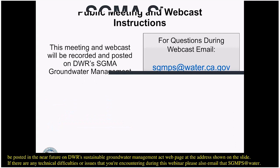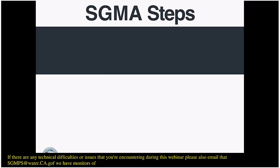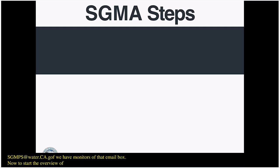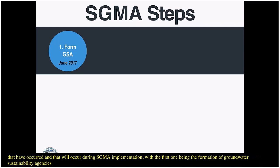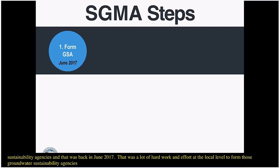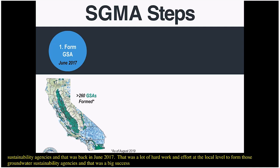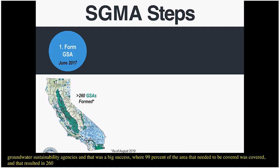Now we'll start an overview of the Sustainable Groundwater Management Act as it relates to the GSP submittal. There are a number of steps that have occurred and will occur during SGMA implementation, with the first being the formation of groundwater sustainability agencies back in June 2017. That was a significant success, with 99% of the area needing coverage covered, resulting in over 260 groundwater sustainability agencies across the state, shown in the green areas on the map.